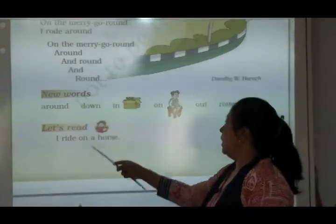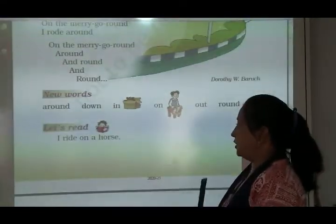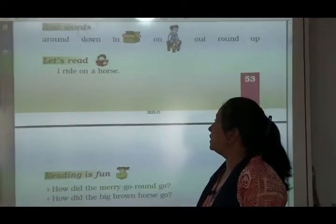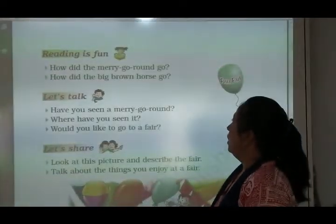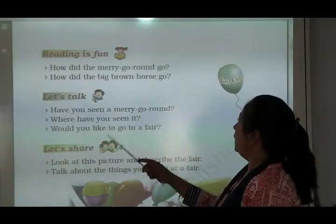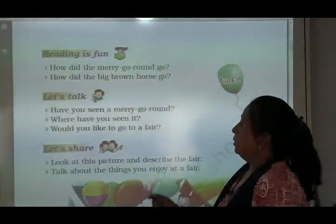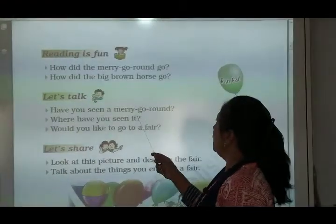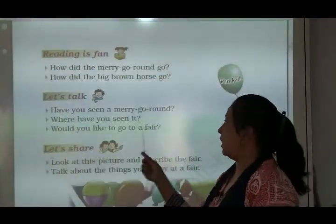Let's read. I ride on a horse — मैं horse पे सवारी कर रही हूँ. Ride means सवारी करना. Let's learn question answer. How did the merry-go-round go? Merry-go-round कैसे जा रहा था? The merry-go-round went round and round.